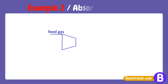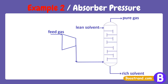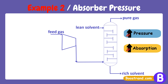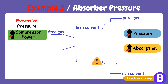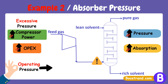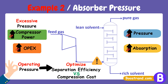Example 2: absorber pressure. Any absorption process favors a high pressure, which would increase the recovery of the impurity to be removed from the main gas. However, excessively increasing the pressure would lead to a larger compressor power required to deliver the gas to the absorber, which is commonly a large operating cost. So here we should only consider the operating pressure that would deliver enough separation and yield on-spec products so that the absorption process achieves its goal.